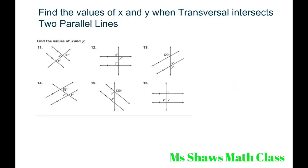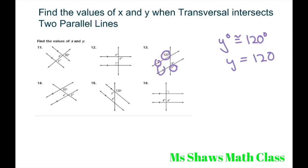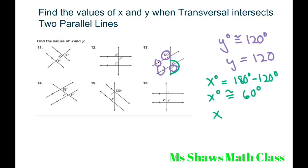For number 13, alternate exterior angles are congruent when you have two parallel lines. So Y degrees equals 120 degrees — Y equals 120. And if Y equals 120, then these two angles are supplementary because of our parallel lines. So X degrees equals 180 degrees minus 120 degrees, which equals 60 degrees. X equals 60.